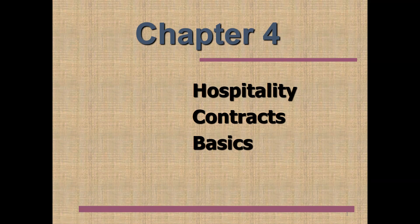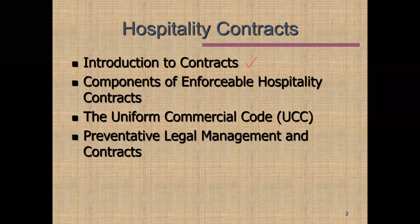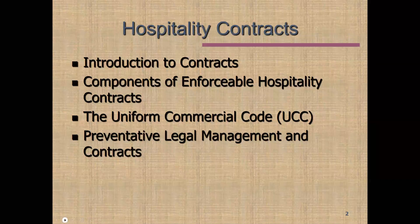Welcome to our second lecture covering chapter 4 on hospitality contracts basics. In lecture 1, we talked about the introduction to contracts and the four elements of contract law: agreement, consideration, legal capacity, and legal object. In this lecture, we're going to discuss the Uniform Commercial Code, most commonly called the UCC, as well as ways to prevent contractual disputes.